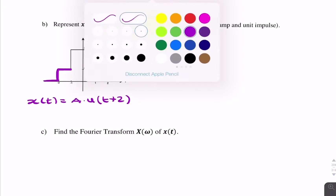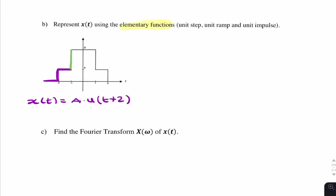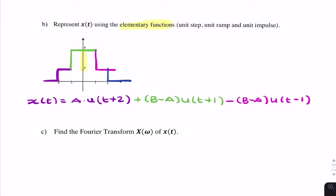We then have a second step at t = minus 1, with amplitude equal to the difference b minus a. So we add (b − a) times a unit step of (t + 1). There's another step at t = 1 that brings it down, so it's negative, with amplitude b minus a: minus (b − a) times u(t − 1). The final step function goes down at t = 2 with amplitude a: minus a times u(t − 2).